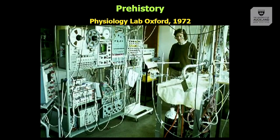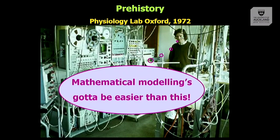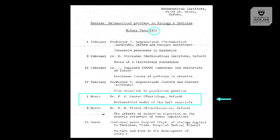This is me at Oxford in a physiology lab. I actually started primarily doing experimental work and then realised that modelling seemed a much preferable way of handling biology. The first talk I can discover — I think this is probably the first talk I ever gave — was at the Mathematical Institute at Oxford in 1974 on a mathematical model of the left ventricle.